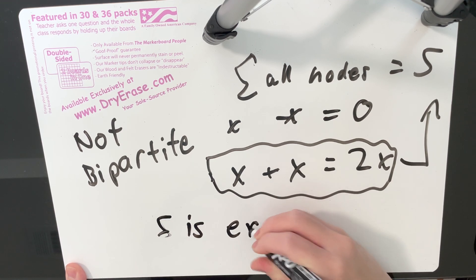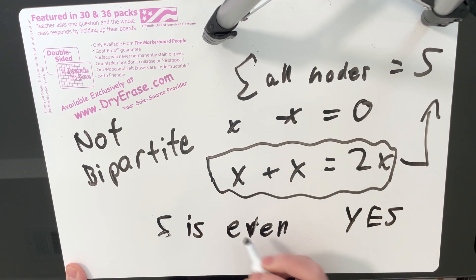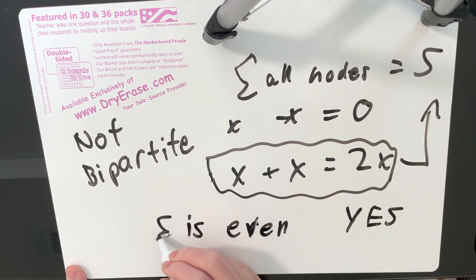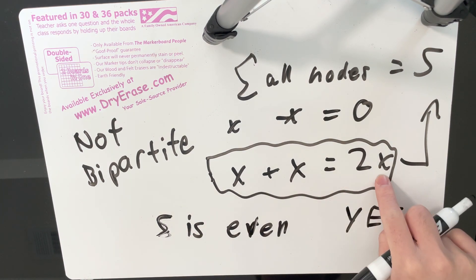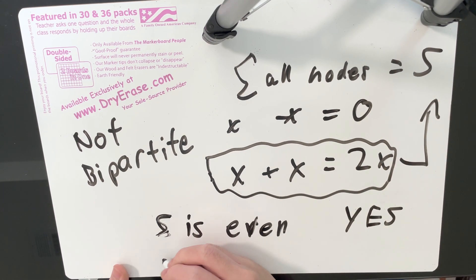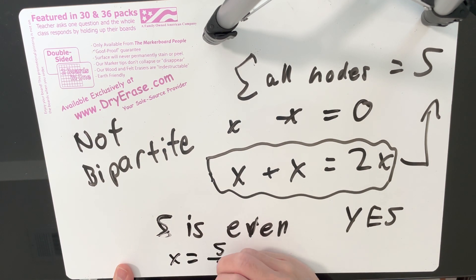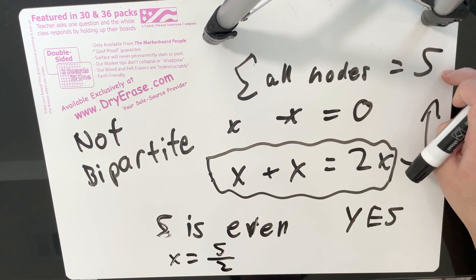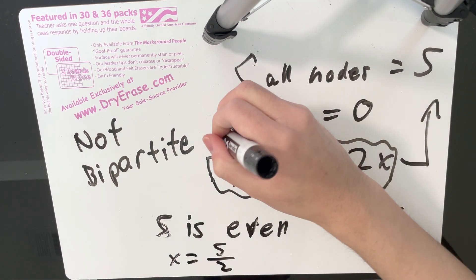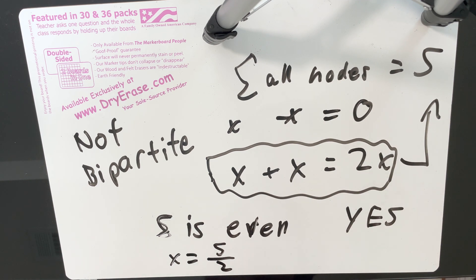If S is even, the answer is yes. We can set x equal to S over 2, apply that move to any two nodes, and then S becomes zero. After that, we use the rearrangement moves to make all nodes actually equal to zero.